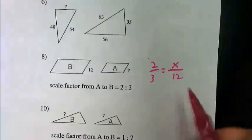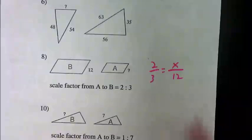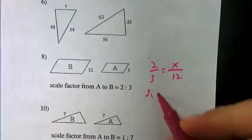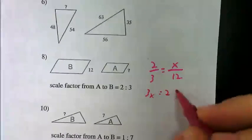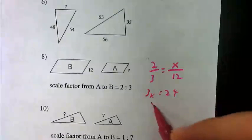All right, let me finish this guy. So again, cross-multiply on that one. You'd have 3X equals 24, divide by 3, and X is 8.